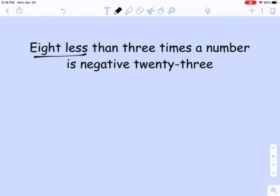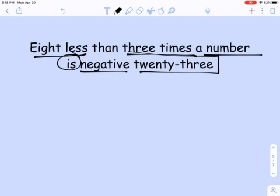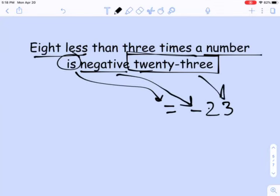Now when you look at this and it says eight less than three times a number is negative 23, we can unpack that. We got a lot of different things we can use. We know negative 23 is negative 23. Sometimes I like to go backwards on these and start with the 'is.' I know the 'is' is going to be equals, and then we got negative 23.